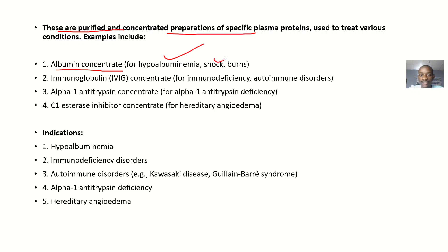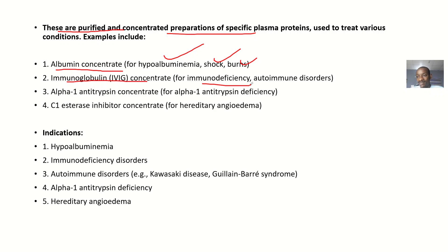You can also use albumin concentrate to treat shocks and burns. Then there is immunoglobulin concentrate — we use it for treating immunodeficiency. The patient has a low immune system, so you concentrate immunoglobulins and give them.